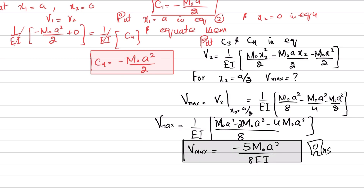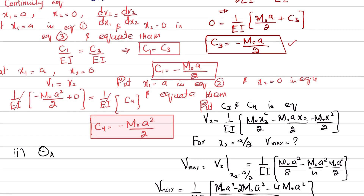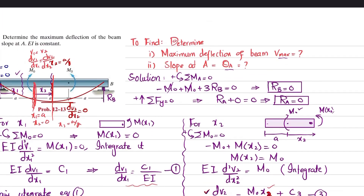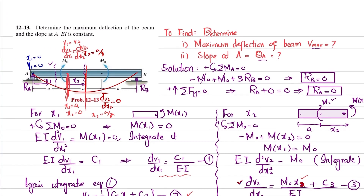For the second part, we find the slope at point A. Slope at A corresponds to x1 = 0, so we use Equation 1.